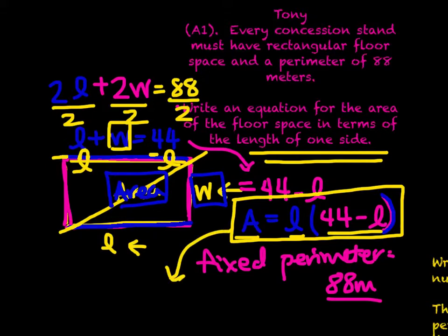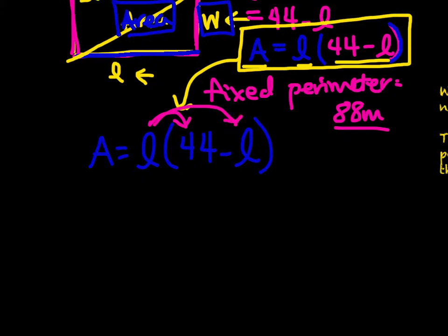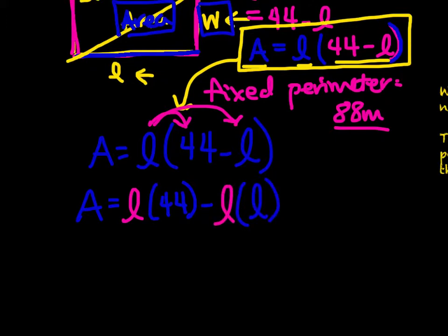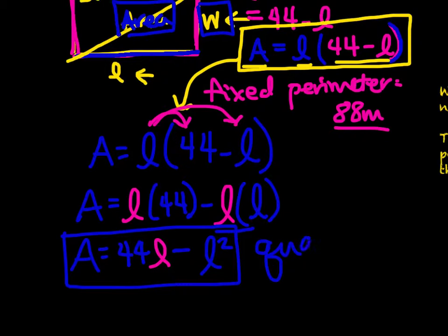We could rewrite this using the distributive property. We could say the area equals the length times 44 minus the length times the length. So we could finish this up with area equals 44 times the length minus l squared. So we have two versions of this, but if we notice, this is quadratic.